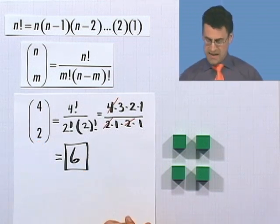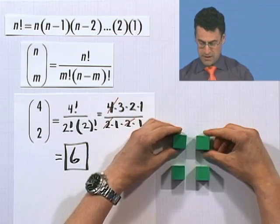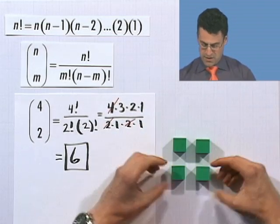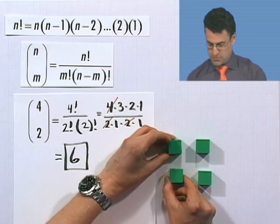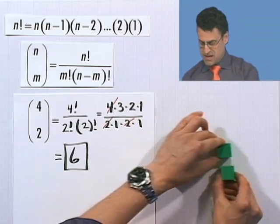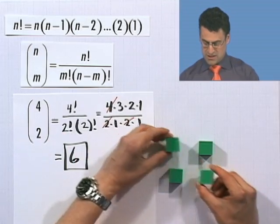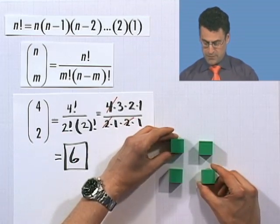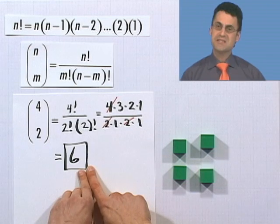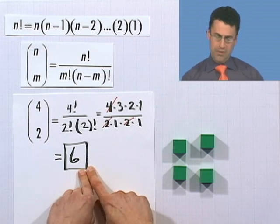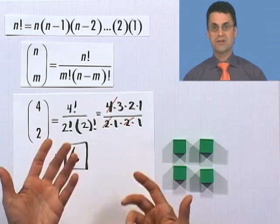There are 6 different ways of picking 2 from a collection of 4, and I'll demonstrate. Here are the 6 ways of picking 2 blocks: there's these 2 — that's 1; these 2 — that's 2; these 2 — that's 3; these 2 — that's 4; these 2 — that's 5; and these 2 — that's 6. That's what 6 means: the number of ways of picking 2 things from a collection of 4.